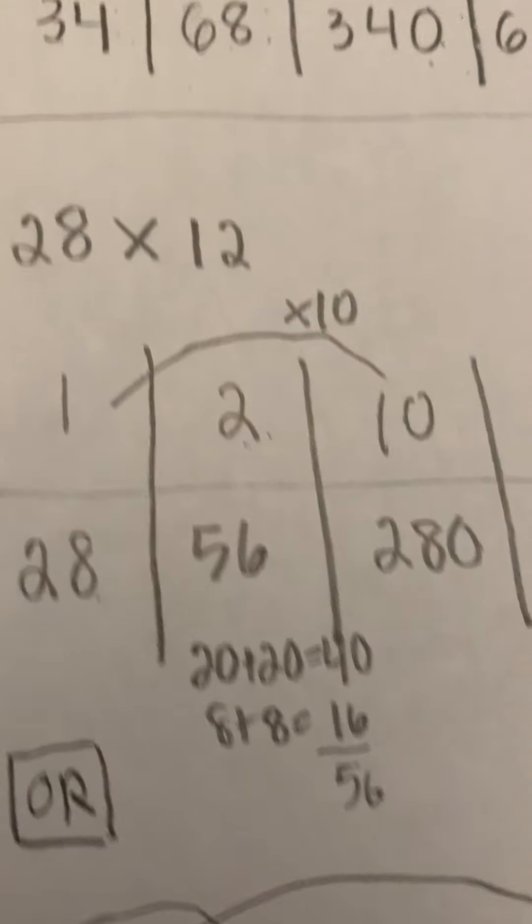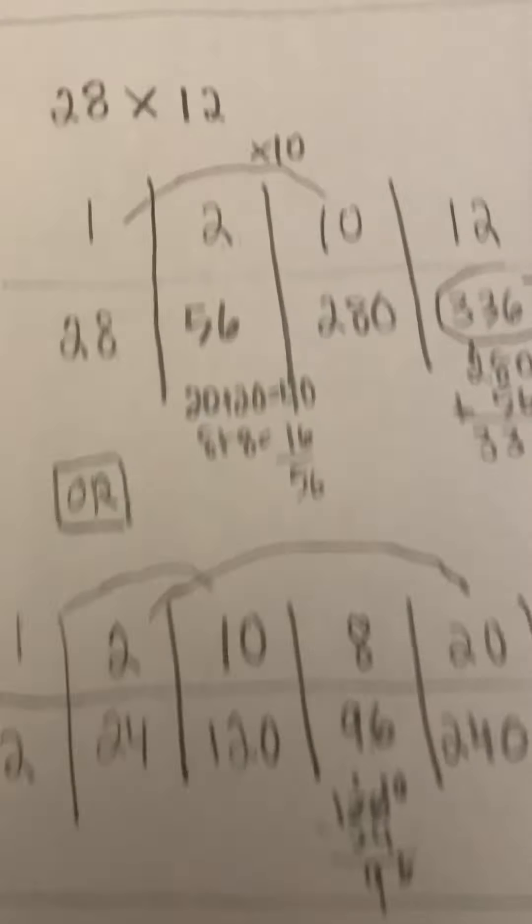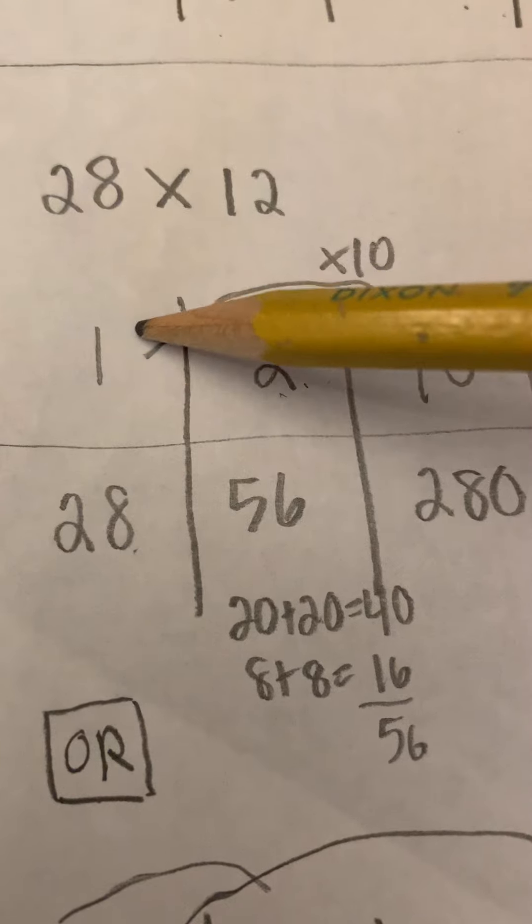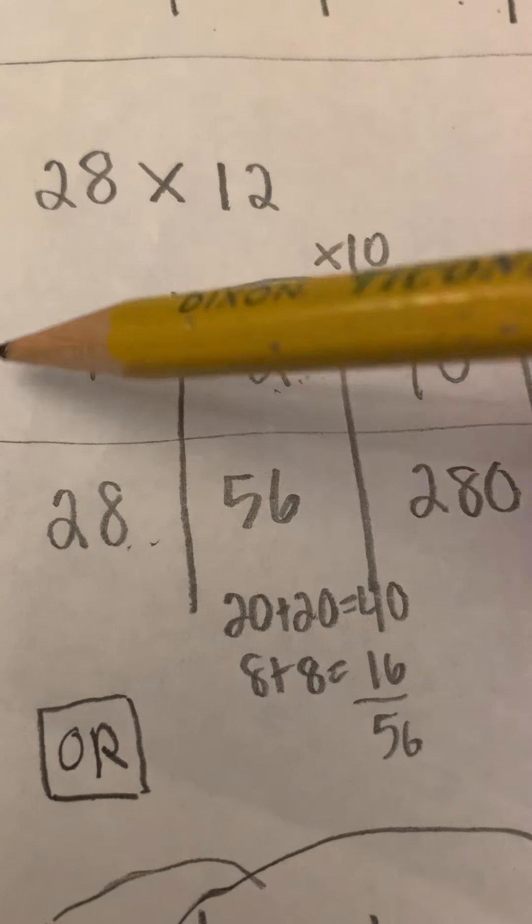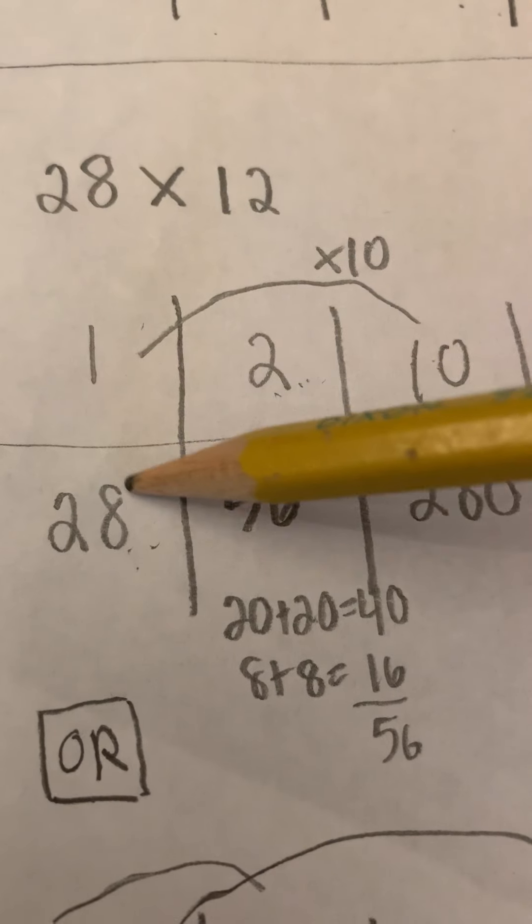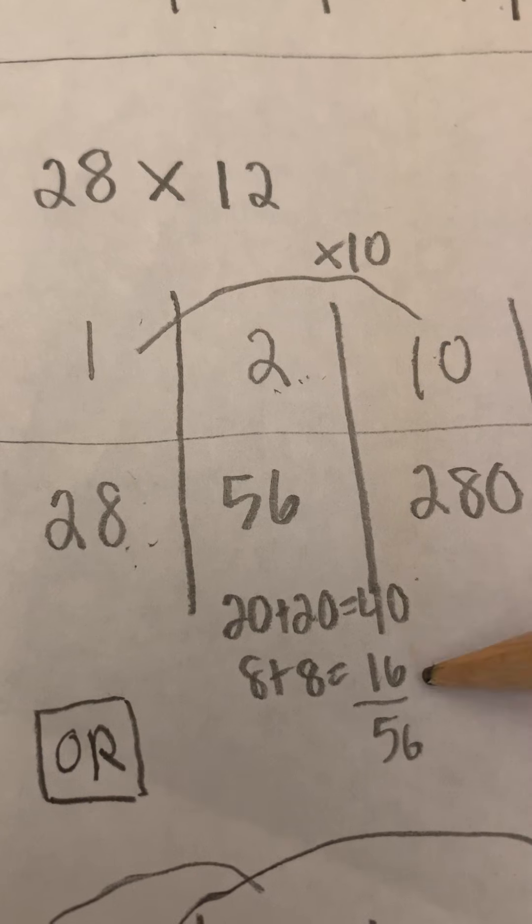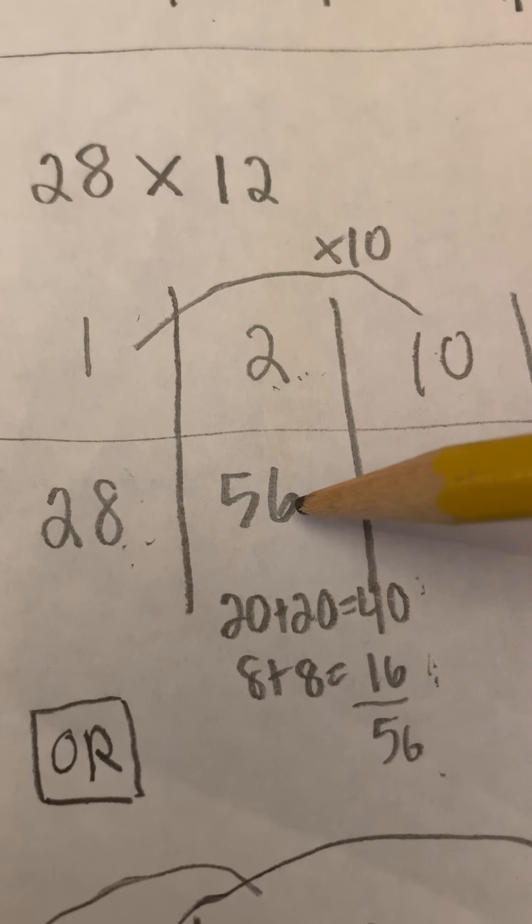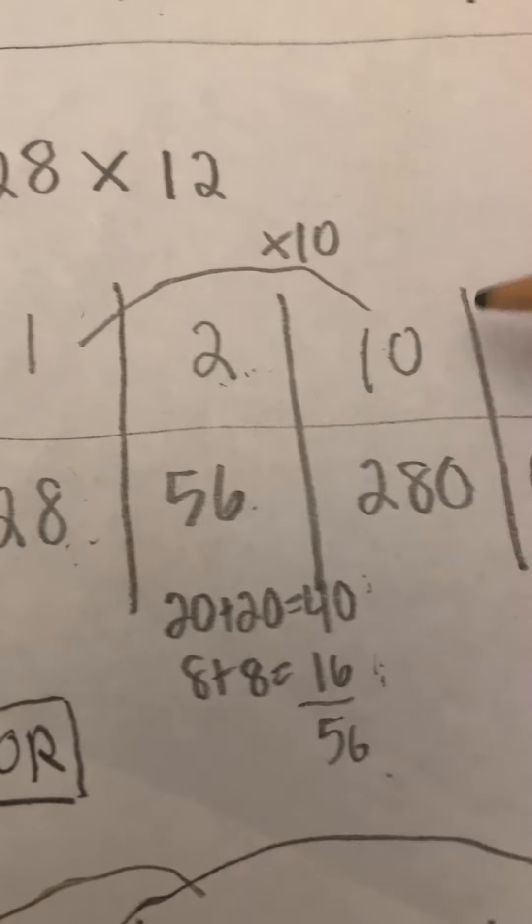Then we did 28 times 12, I said you could do it this way, or a little more work this way. Multiplying 1 times 28, double 20s is 40, double 8s is 16, add my 40 and my 16 together to get 56. Multiplying by 10,